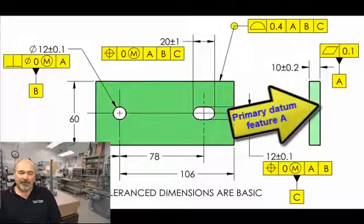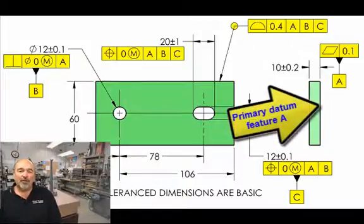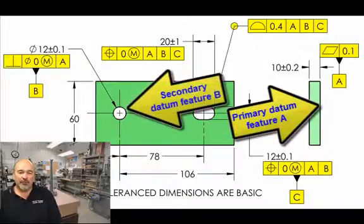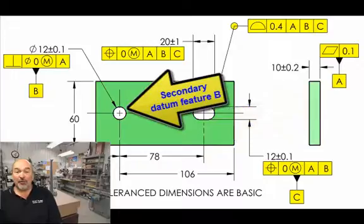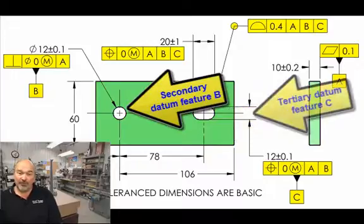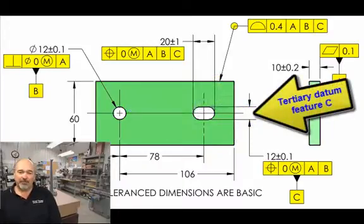There's always inspection error, but we should try to keep it to a minimum. This tip illustrates establishing a datum reference frame for a part that uses a planar surface for a primary datum feature, a hole as a secondary datum feature, and a slot as the tertiary datum feature.